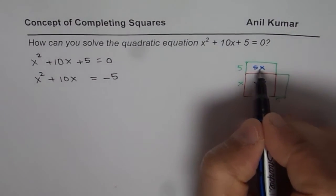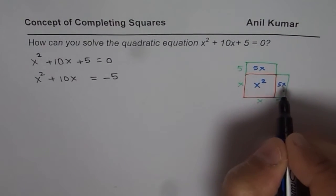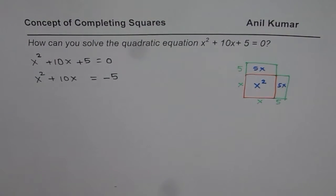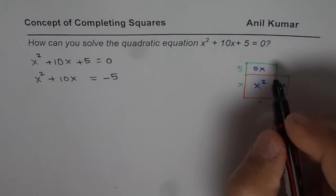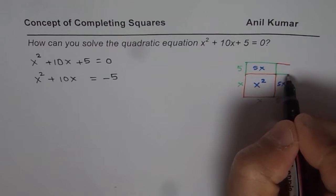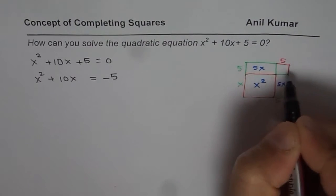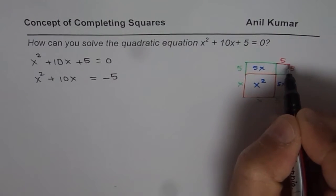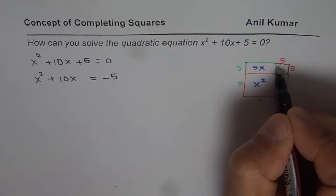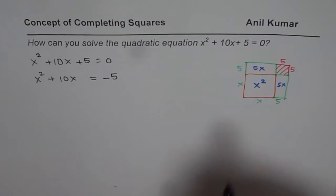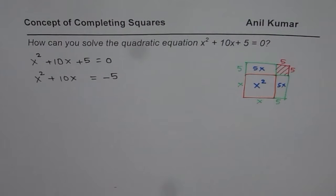The area of these two rectangles will be 5x and 5x, which combined makes 10x. The shape looks like a square, isn't it? We can complete this square by adding a piece at this corner with dimensions 5 and 5. If I add this piece, which is 5 times 5 or 5², I complete my square.